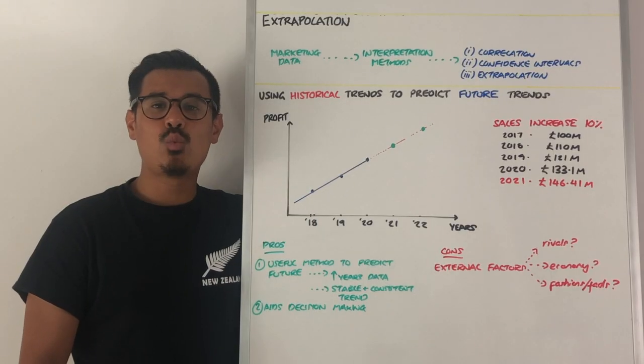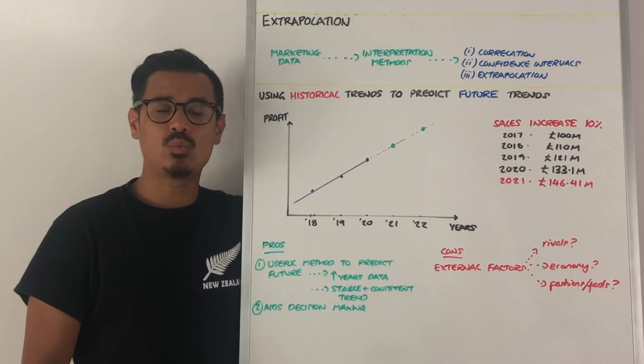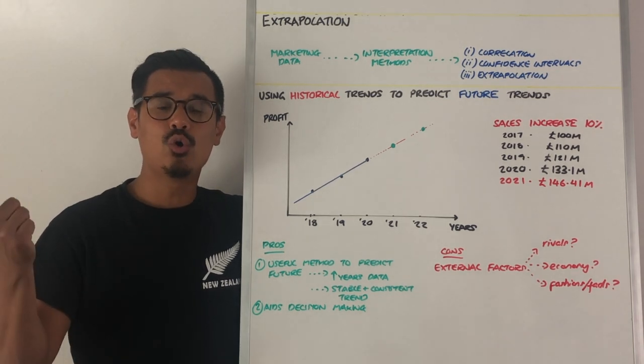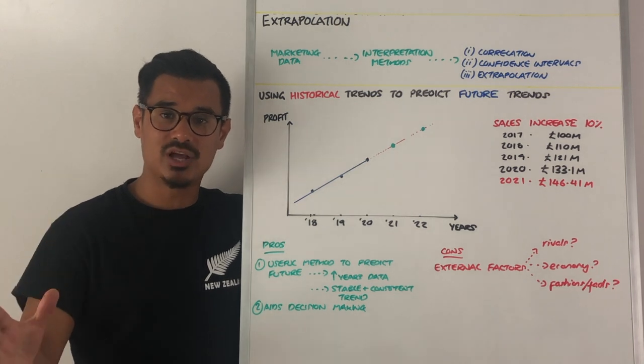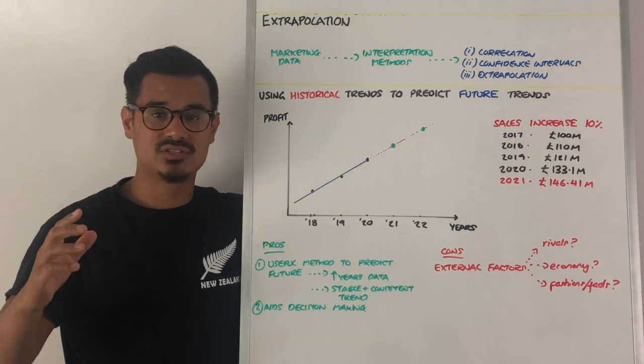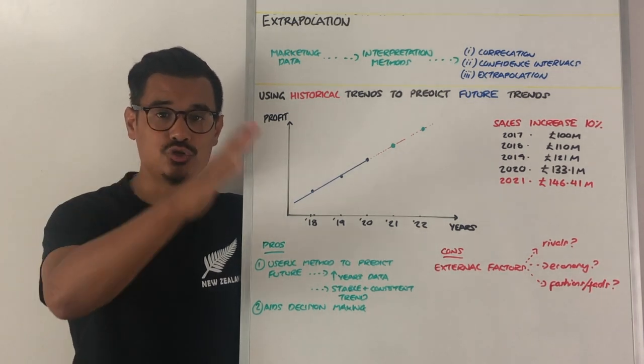Let's have a session on extrapolation. When we have marketing data, we need to interpret this marketing data. We might use correlation, confidence intervals, or extrapolation, which is what we're going to look at here. Extrapolation is simply using historical trends, past trends, to help forecast future trends.